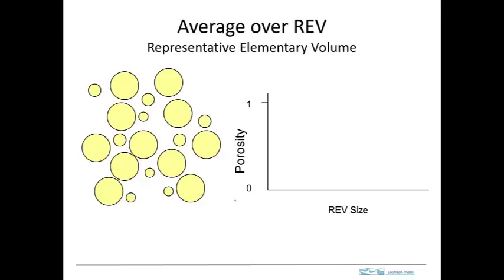In order to have the term porosity really make any sense, we need a concept called the representative elementary volume. Porosity and other properties used for describing porous media are average properties. Porous media is a complicated material at small scale — it has very complicated pore geometries — and we need to average out those complications.